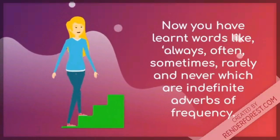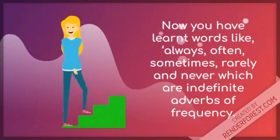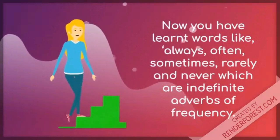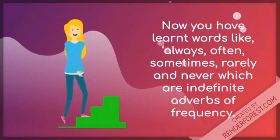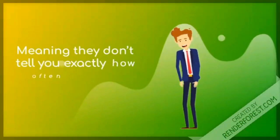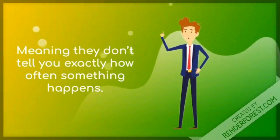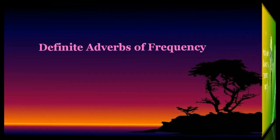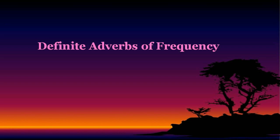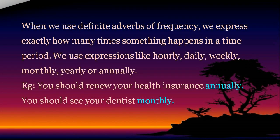Now you have learned words like always, often, sometimes, rarely, and never — which are indefinite adverbs of frequency, meaning they don't tell you exactly how often something happens. Definite adverbs of frequency express exactly how many times something happens in a time period. We use expressions like hourly, daily, weekly, monthly, yearly, or annually.